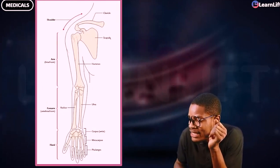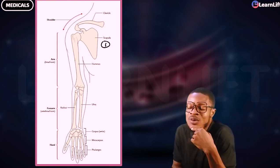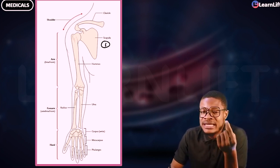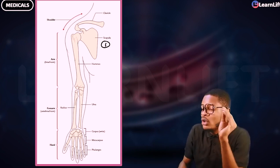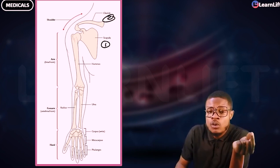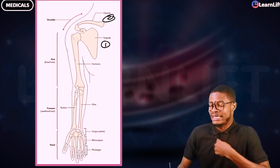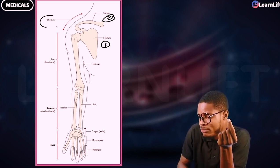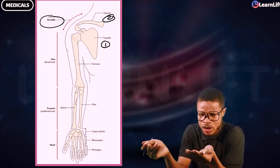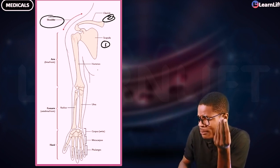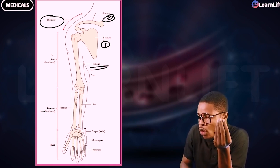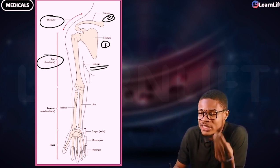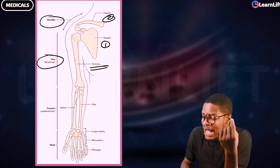Now look at this diagram. Number one here is your scapula — it is posterior, also called the shoulder blade. How many scapula? One. Your clavicle is number two — collarbone, or beauty bone. Together, the scapula and clavicle form the bones of the shoulder. Then you have the humerus — the bone of the arm. The arm is also called the brachium. How many bones in the brachium? Just one — the humerus.